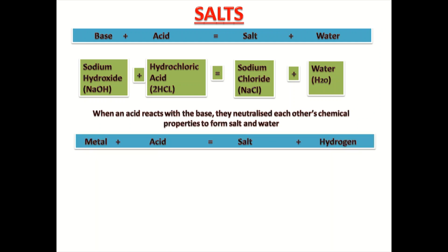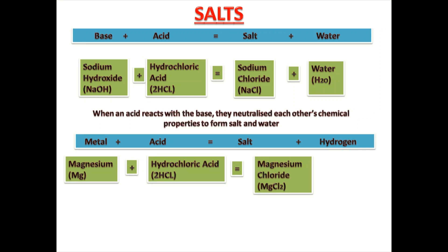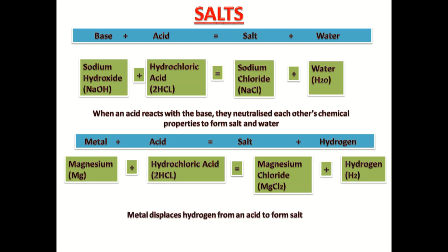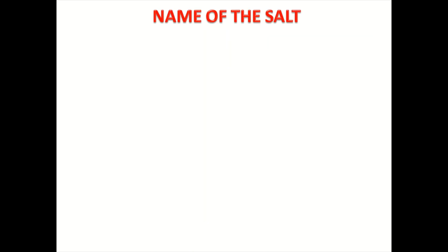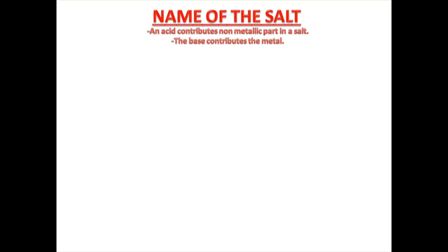Second reaction to form salt is when metal reacts with acid to form salt and hydrogen. Let us see its reaction. Here, metal is magnesium which is added to hydrochloric acid and it gives salt that is magnesium chloride and hydrogen. So metal displaces hydrogen from an acid to form salt.